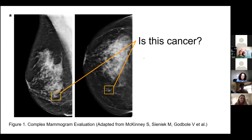If you say this is cancer and you are wrong, this patient may have to go through multiple years of treatment, including chemotherapy and surgery. Or even worse, if you say that this isn't cancer and it later turns out to be cancer, then by the time you catch it, it might be too advanced and this patient might not have any options left.